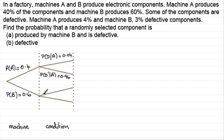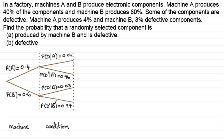Similarly, you could do much the same for B: the probability of being defective given that it came from B. If you filled those in, 3% are defective coming from B, and that leaves you with 97% or 0.97 not defective coming from B. Hopefully you've got a tree diagram looking something like that.